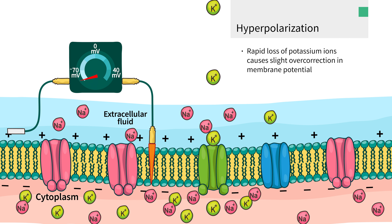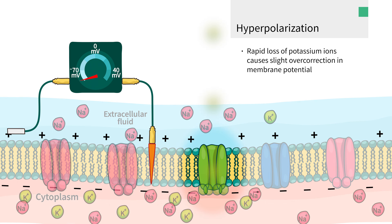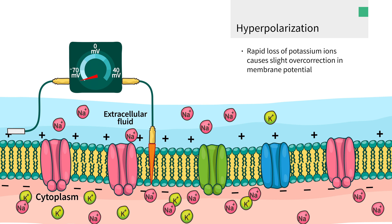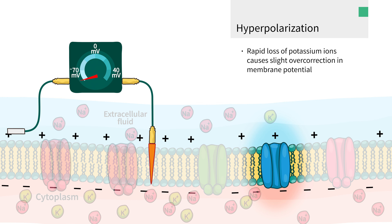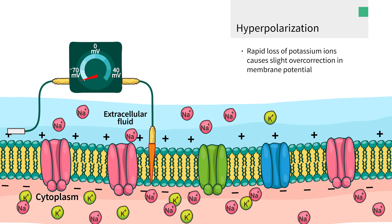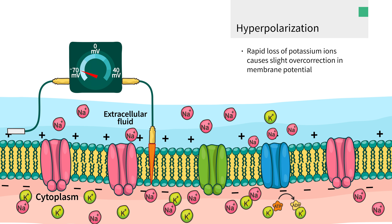Once the voltage-gated potassium channels close, our ceaselessly hardworking friend, sodium-potassium ATPase, helps to bring both the membrane potential and concentration gradients back to normal.